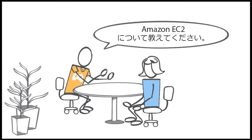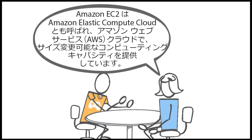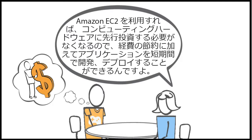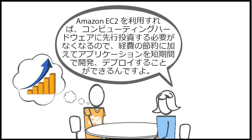Do you know anything about Amazon EC2? Yeah, Amazon EC2, which is also known as Amazon Elastic Compute Cloud, provides resizable computing capacity in the Amazon Web Services Cloud. Using Amazon EC2 eliminates the need to invest in computing hardware up front, which saves money but also allows applications to be developed and deployed faster.